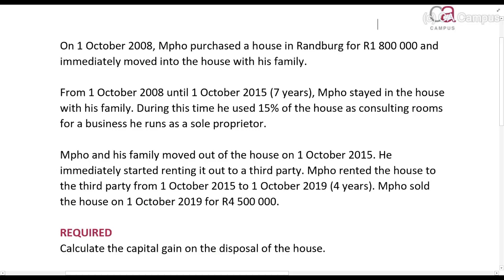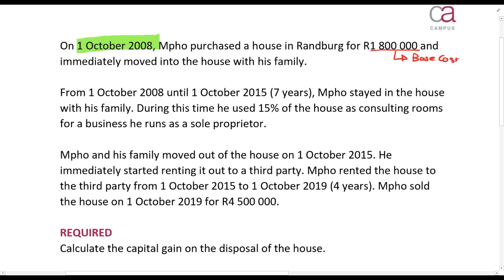In this video we are going to talk about the disposal of a house which has a primary residence and a business assets component to it. On the 1st of October 2008, Paul purchased a house in Randberg for 1.8 million rands and immediately moved in with his family. This is after 1 October 2001 — important — so that 1.8 million rands will be the starting point of our base cost. From the 1st of October 2008 until the 1st of October 2015, for 7 years, Paul stayed in the house with his family. During this time he used 15% of the house as consulting rooms for a business he runs as a sole proprietor. The portion used as a business cannot be a primary residence — that is important.